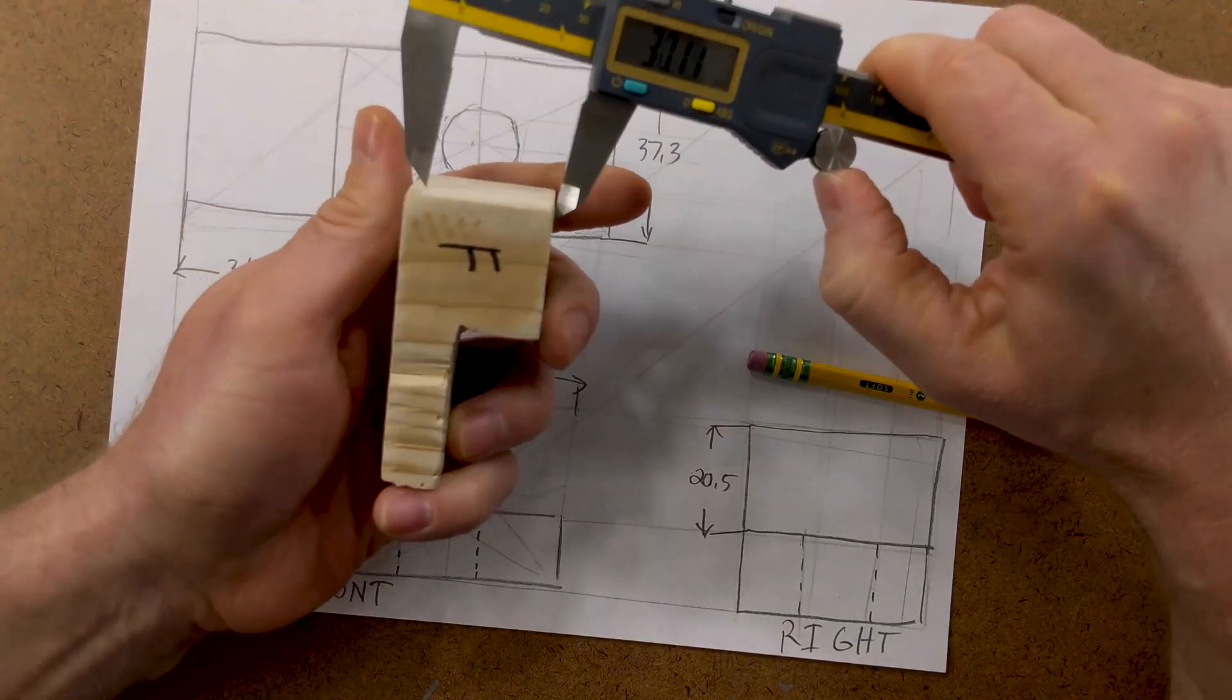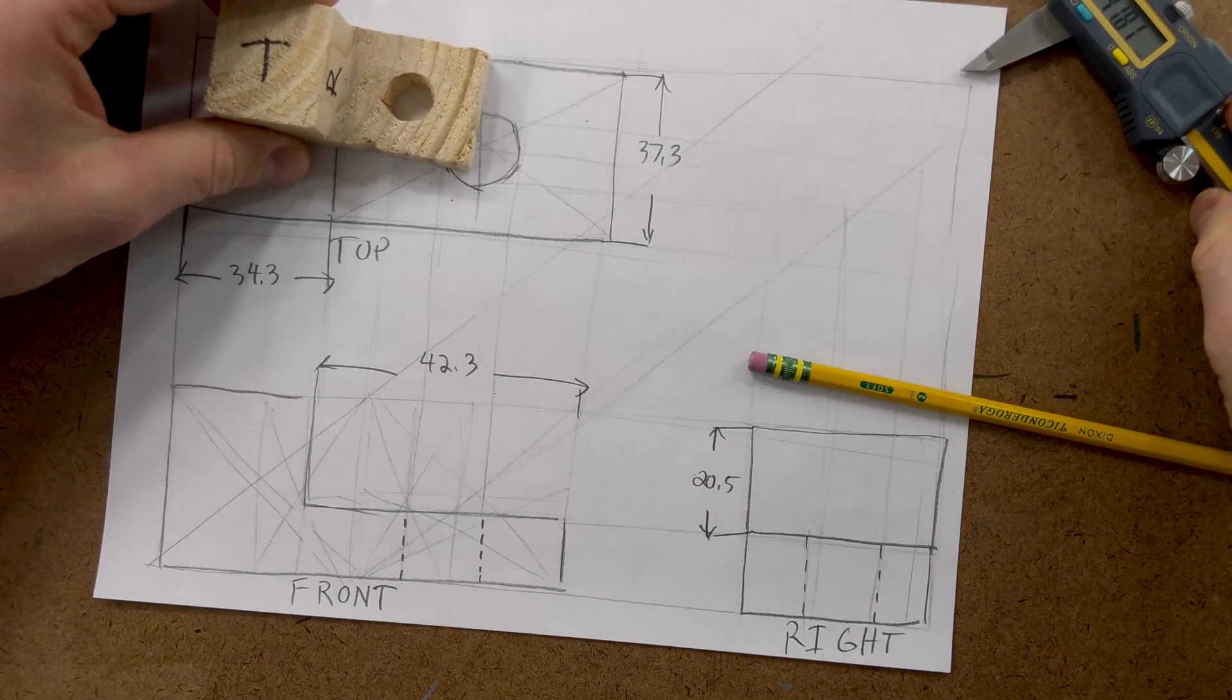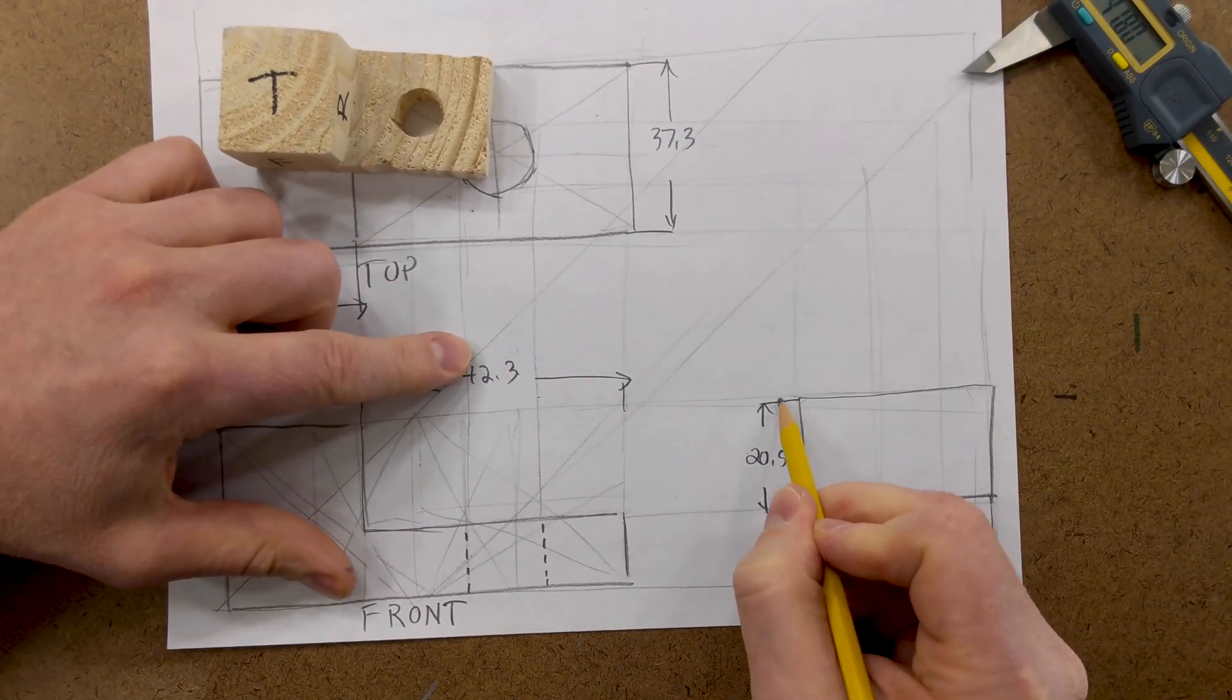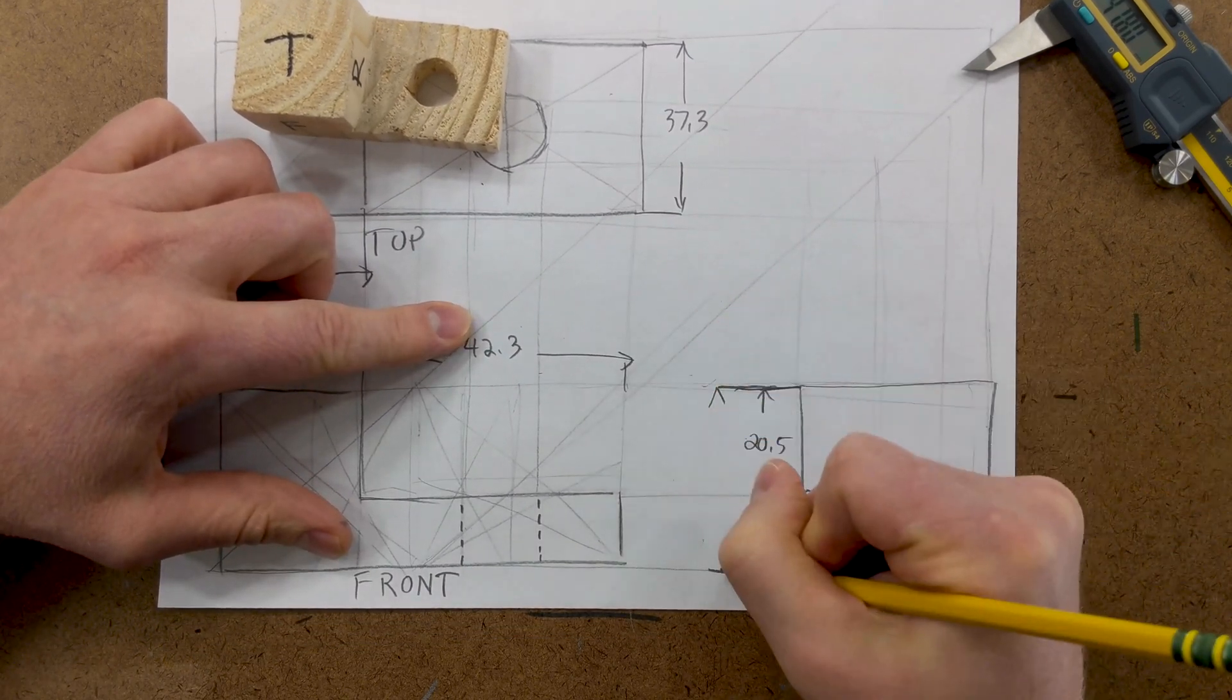Also, we need to know the height, so let's go ahead and find that, 37.4. You can have staggered dimensions like this, put the larger dimension outside.